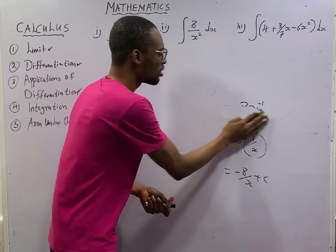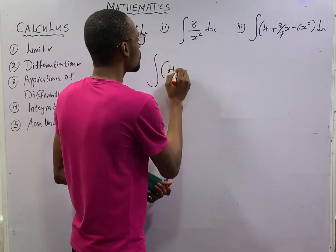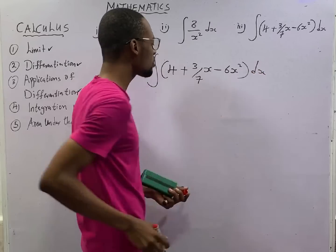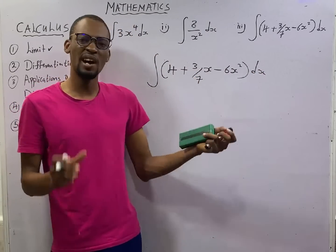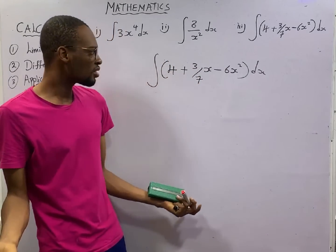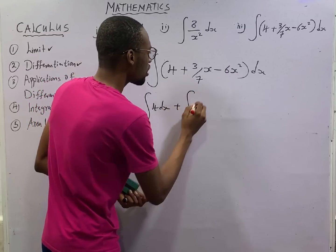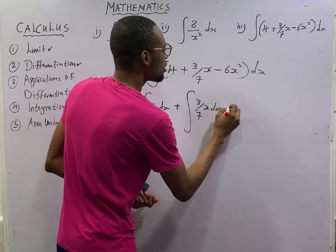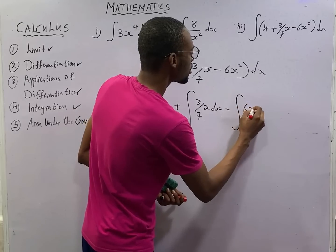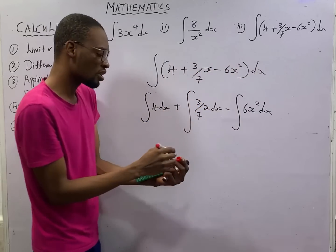Then here, remember we did differentiation of sum and difference right? For integration of sum and difference the rules of differentiation of sum and difference will apply. When you are given a function separated by plus or minus and you are asked to integrate, what you simply do is integrate them one by one. This is the same thing as integral of 4 ds plus integral of 3 over 7s ds minus integral of 6s squared ds.